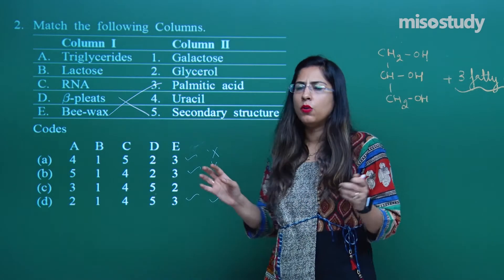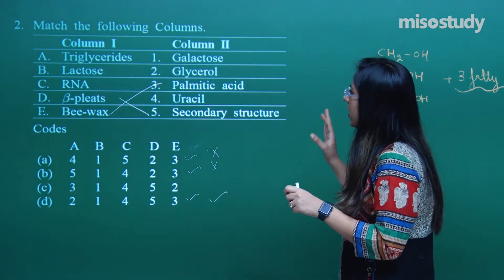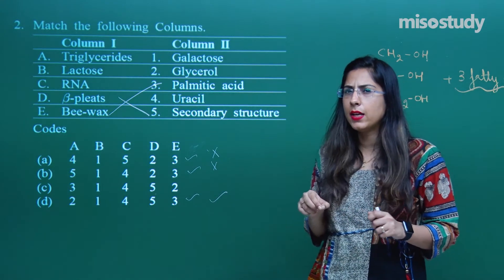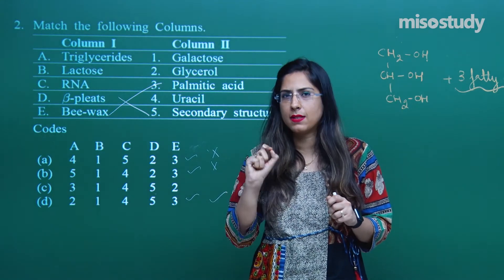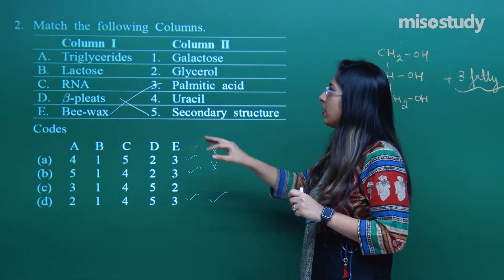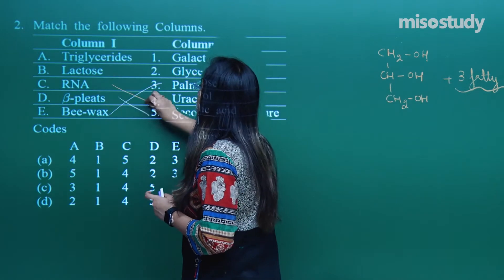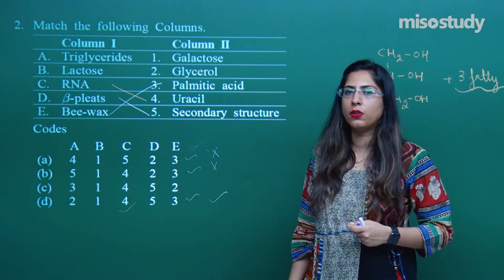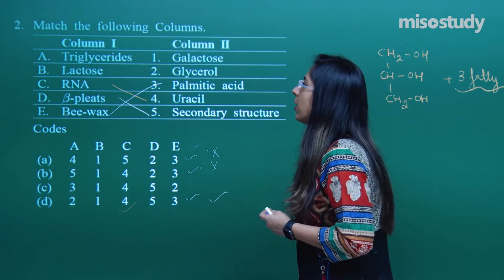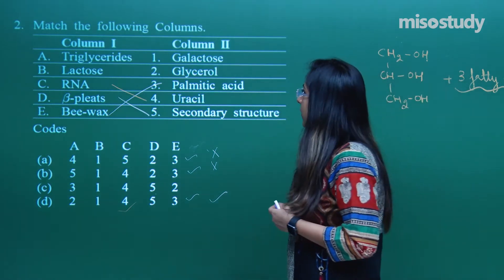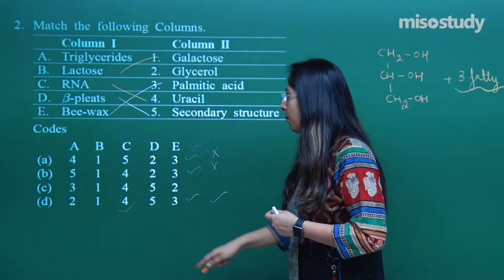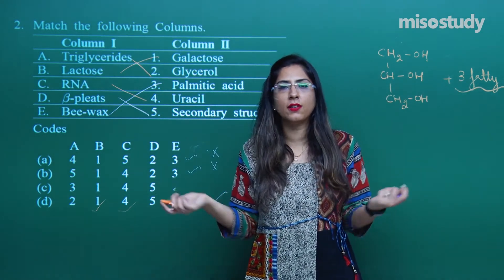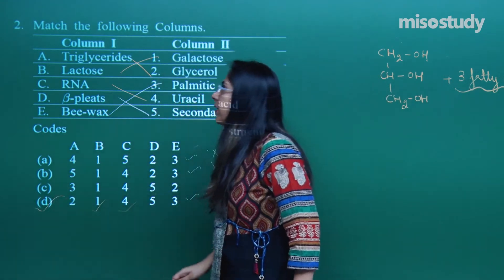Next, RNA — we know that RNA and DNA are genetic material. In the column it is written uracil; we know that in RNA, uracil is present instead of thymine. So C matches with the fourth option. Next, lactose — we are talking about a disaccharide. Galactose is also a disaccharide component, so for B the first option is correct. Finally, triglycerides — one glycerol and fatty acid — so the correct option for question 2 is option D.